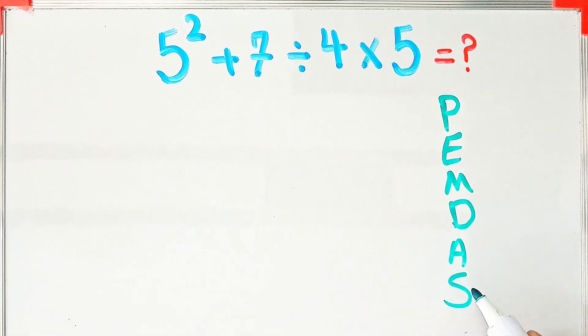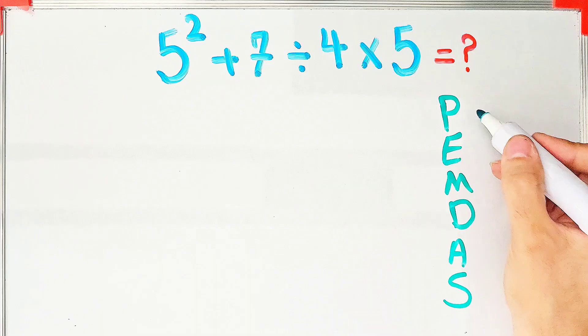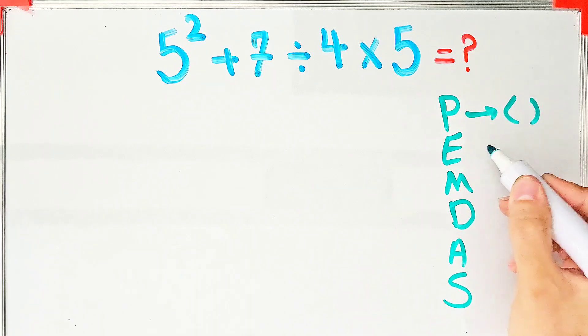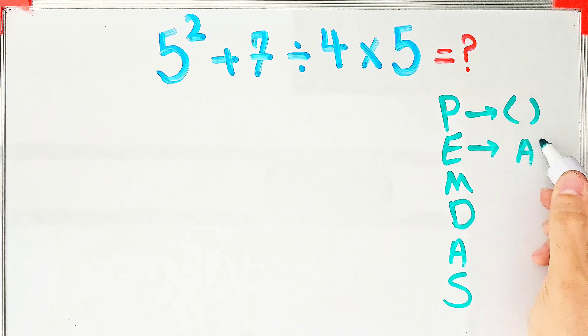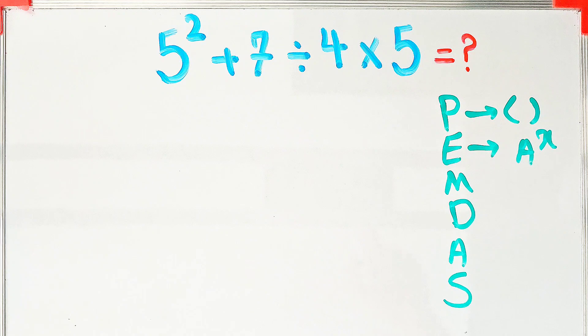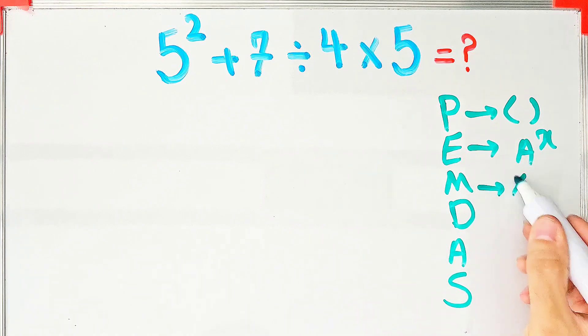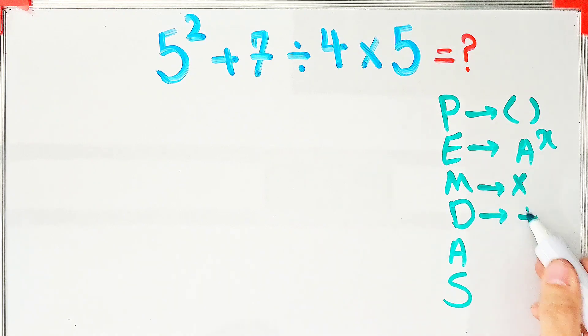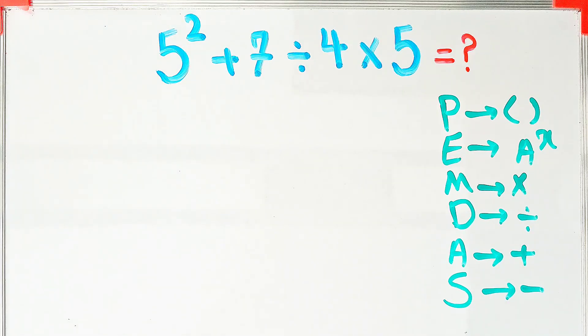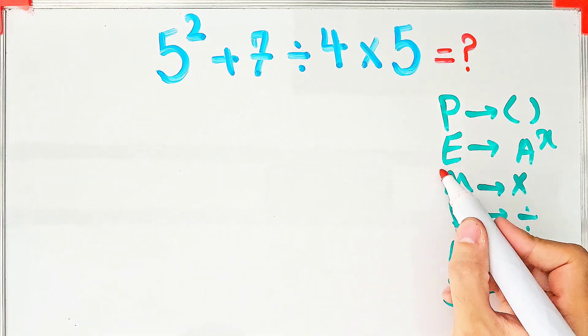In this rule, P stands for Parentheses, E stands for Exponents, M stands for Multiplication, D stands for Division, A stands for Addition, and S stands for Subtraction.